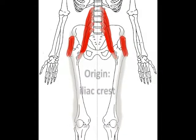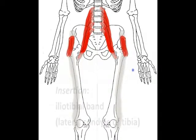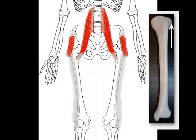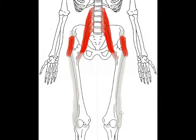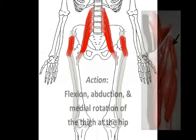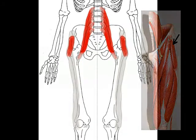The TFL originates along the iliac crest of the pelvic bone and inserts onto the iliotibial band, which then inserts onto the lateral epicondyle of the tibia. Like the iliacus and psoas major muscles, the TFL flexes the thigh as well as abducting and medially rotating the thigh at the hip joint. It also supports the hip and the knee as part of the iliotibial band.